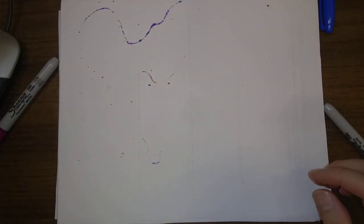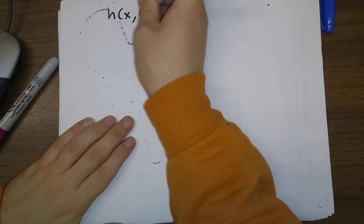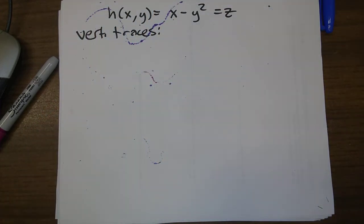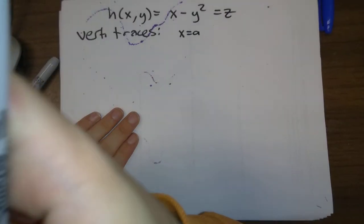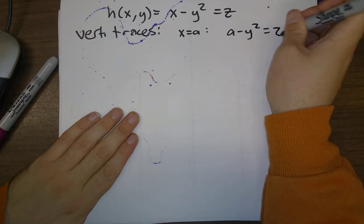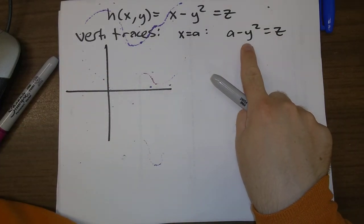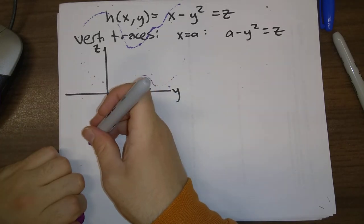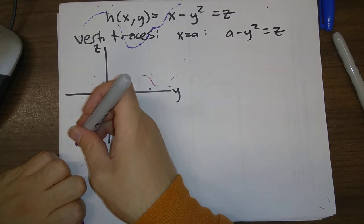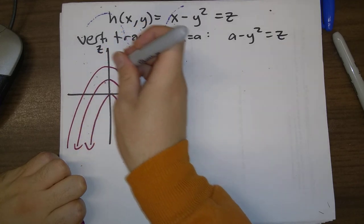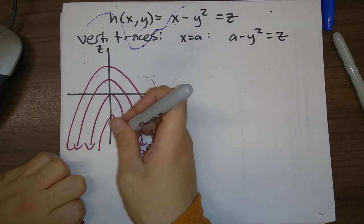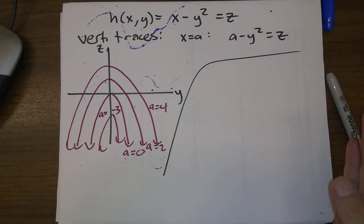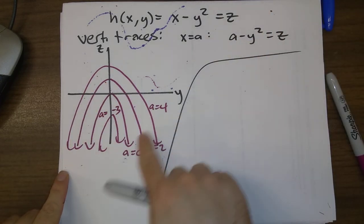For part C, h of x, y equals x minus y squared. For vertical traces with x equals a: a minus y squared equals z, or z equals a minus y squared. These are downward-opening parabolas in the yz-plane, and a gives the z-intercept. So a equals 0 gives z equals minus y squared; a equals 2 gives z equals 2 minus y squared; a equals 4 gives z equals 4 minus y squared.